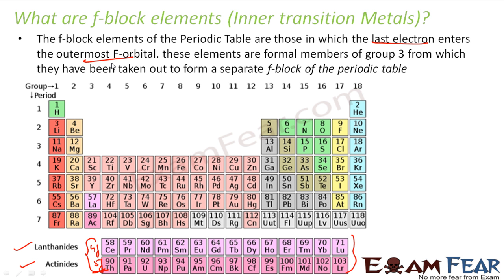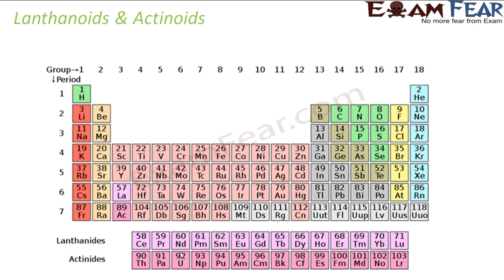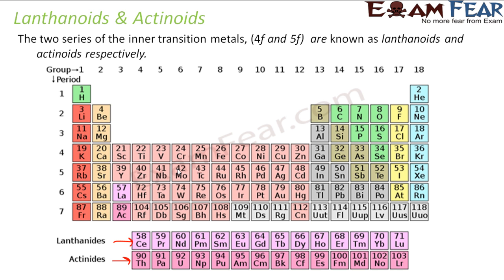If you note the group of F block elements — all elements from 57 to 71 (lanthanides) and 89 to 103 (actinides) are taken from here. After element 57, there is no group increase, which means all these elements are part of group 3. Lanthanides go from atomic number 58 to 71, and actinides from 90 to 103. There are two series of inner transition elements and they are called inner transition metals.